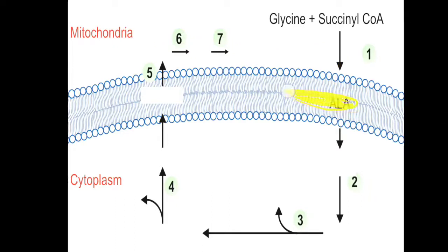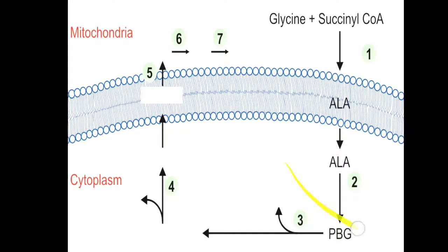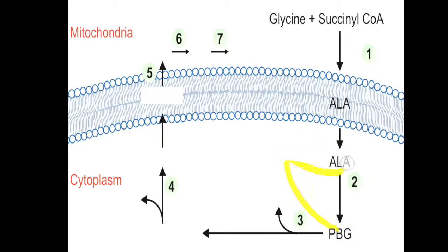Two molecules of delta-ALA combine to form PBG, that is porphobilinogen. These two molecules of ALA combine and make PBG, and the enzyme needed for that is ALA dehydratase.